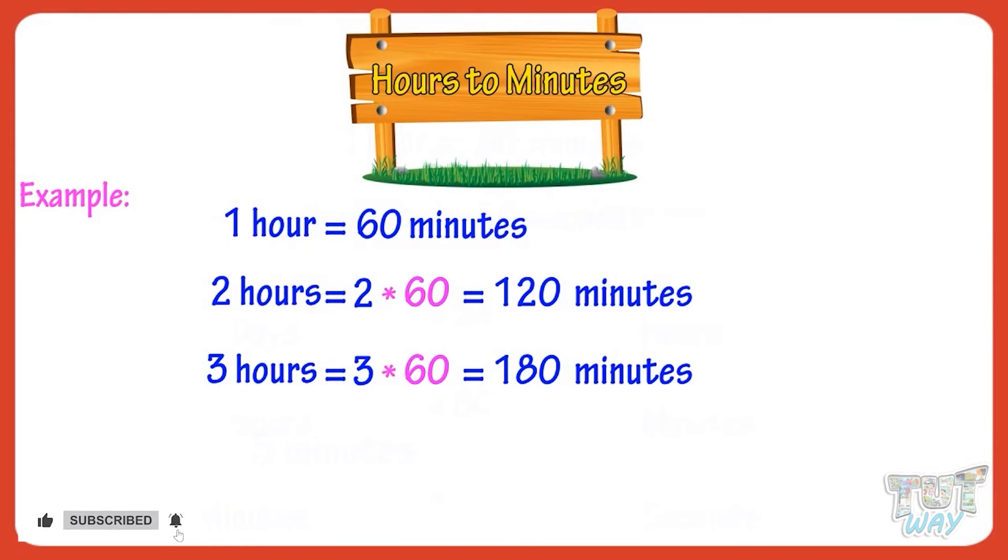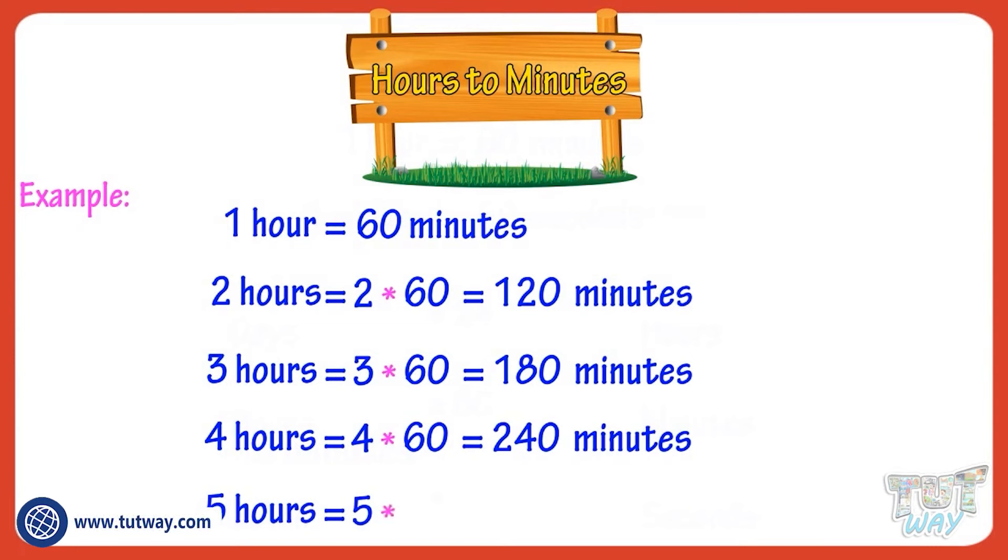Now let's see more examples. Four hours equals four multiplied by 60 equals 240 minutes. Five hours equals five multiplied by 60 equals 300 minutes.